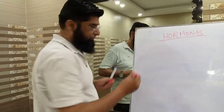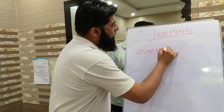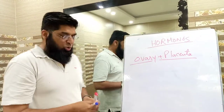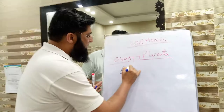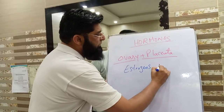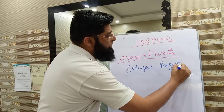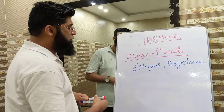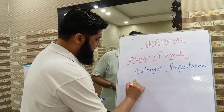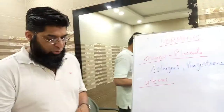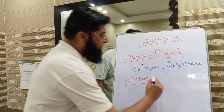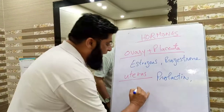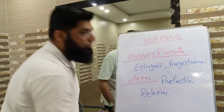Next: Ovaries and Placenta. They produce the sex hormones Estrogens and Progesterone. The Uterus in females also produces Prolactin and Relaxin.